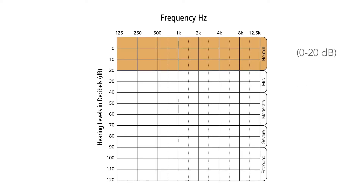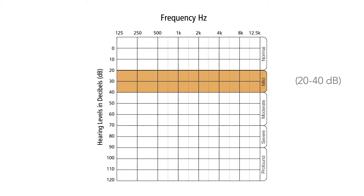At normal, hearing levels will range from 0 to 20 decibels, and you will have no difficulty hearing speech in a noisy environment. At mild, hearing levels will range from 20 to 40 decibels, and you may have some difficulty hearing speech in a noisy environment.